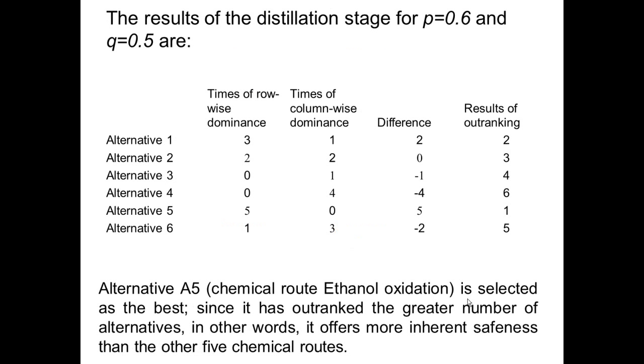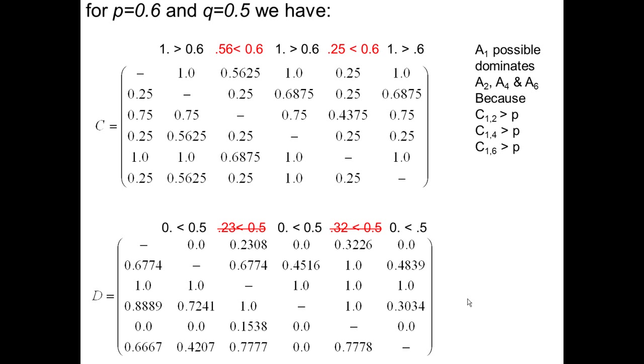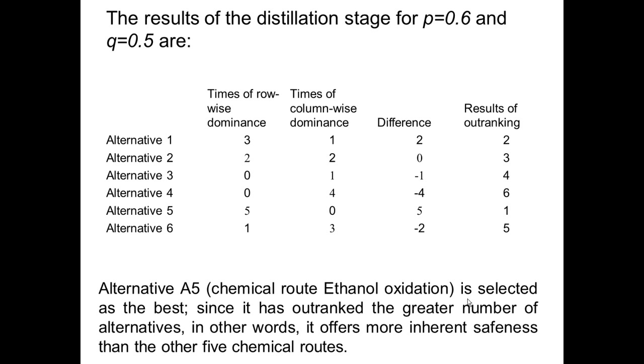The results of the distillation stage for P equal to 0.6 and Q equal to 0.5 are given here. Alternative A5—that is, the chemical route for ethanol oxidation—is selected as the best, since it has outranked the greater number of alternatives. In other words, it offers more inherent safeness than the other five chemical routes.